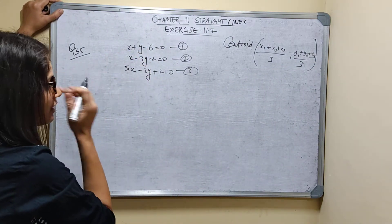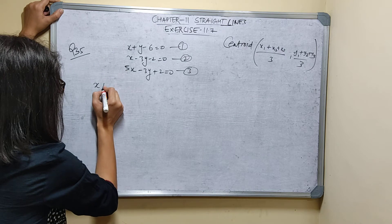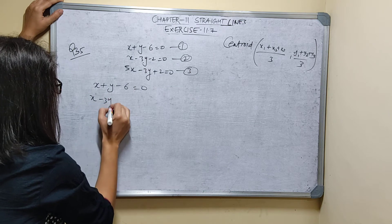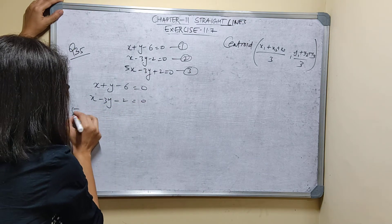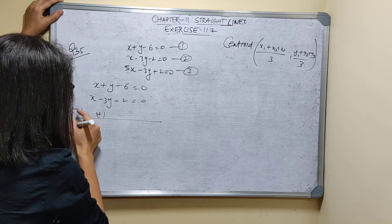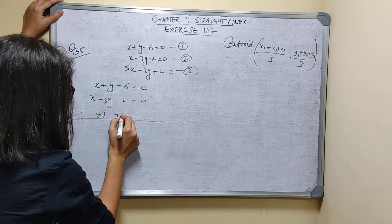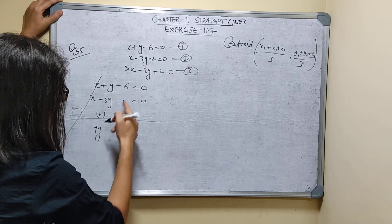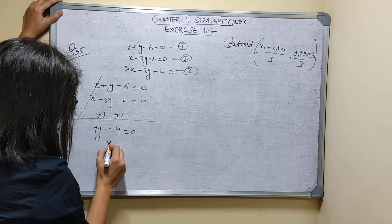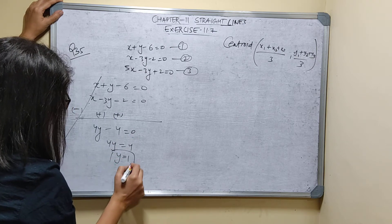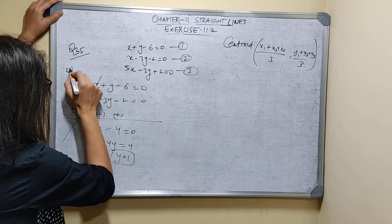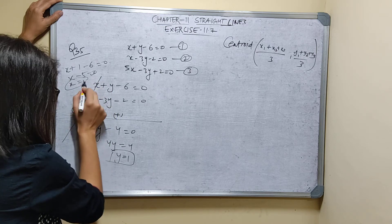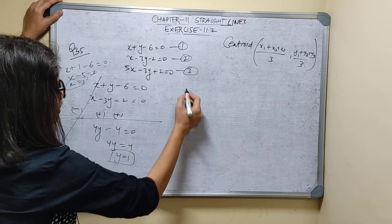First I will solve these 3 equations. Solving equation 1 and equation 2: x plus y minus 6 is equal to 0, and x minus 3y minus 2 is equal to 0. After sign change and subtracting, x minus x is 0, plus y plus 3y gives 4y, minus 6 plus 2 gives minus 4 equals 0. So 4y equals 4, therefore y equals 1. Substituting: x plus 1 minus 6 equals 0, so x equals 5. The first point is (5, 1).